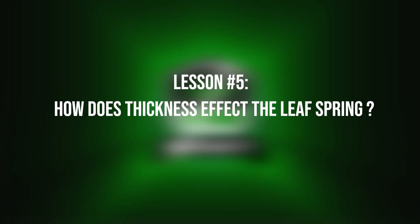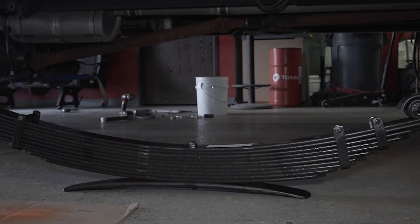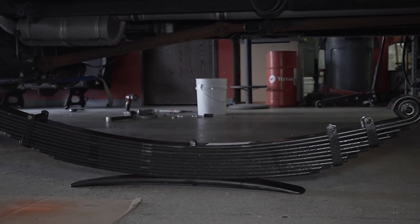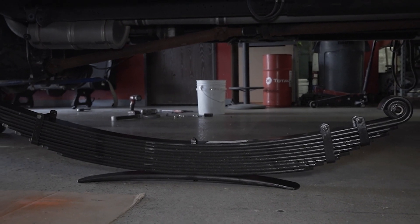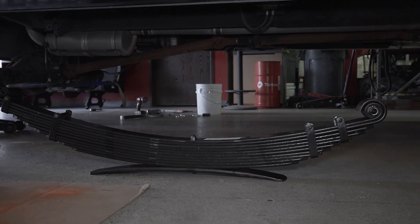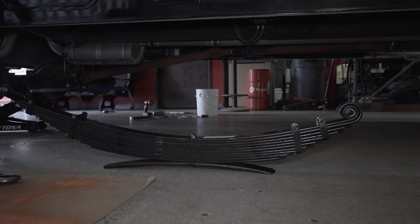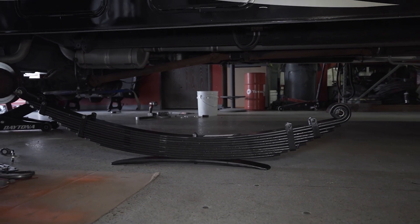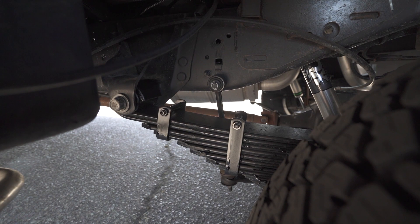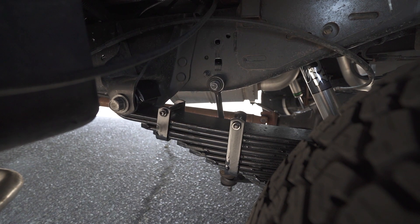Now we're at number five: how does the thickness affect the leaf pack? The number of springs in a leaf spring system can affect the overall spring rate. Generally, increasing the number of springs in a stack tends to increase the spring rate, making the spring stiffer.